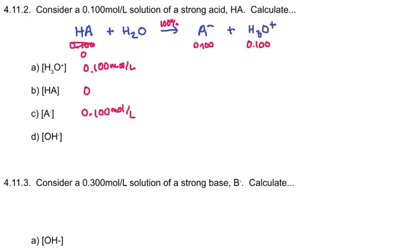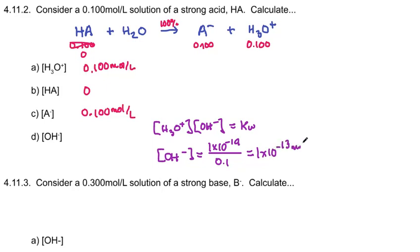And this one we'll actually have to work for. This is an acid so it produces hydronium ions. If we want the hydroxide ions we have to calculate them and that will mean doing this. H3O times OH equals KW, which means OH is KW, 1 times 10 to the minus 14 divided by 0.1, equals 1 times 10 to the minus 13 moles per liter.